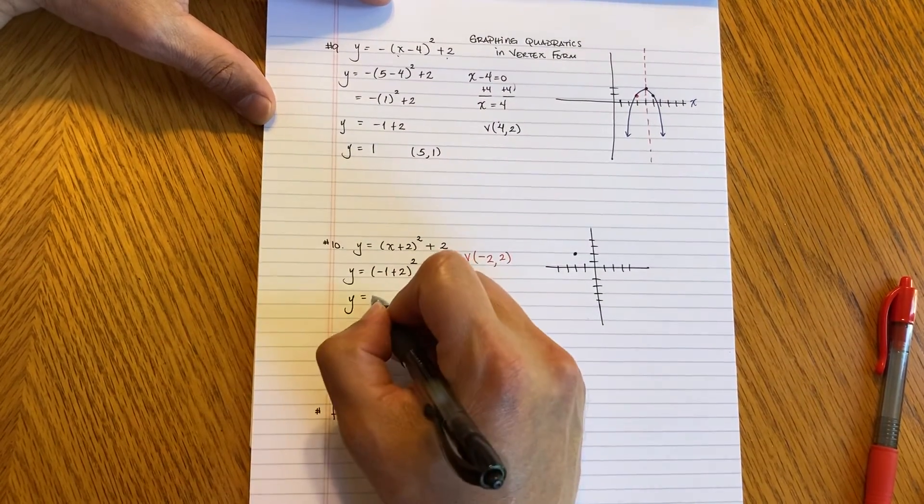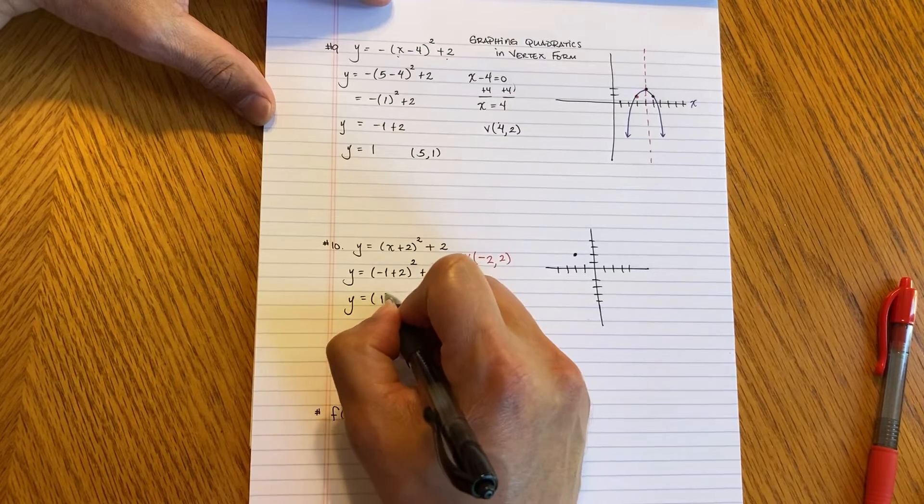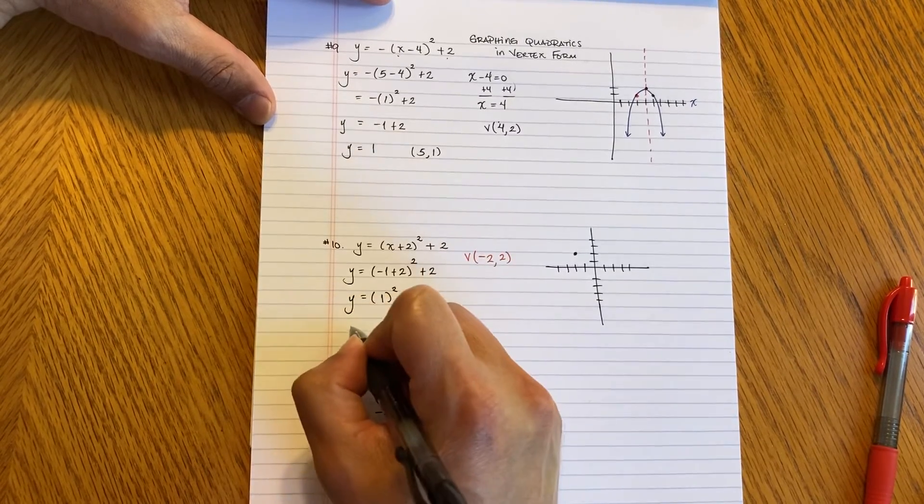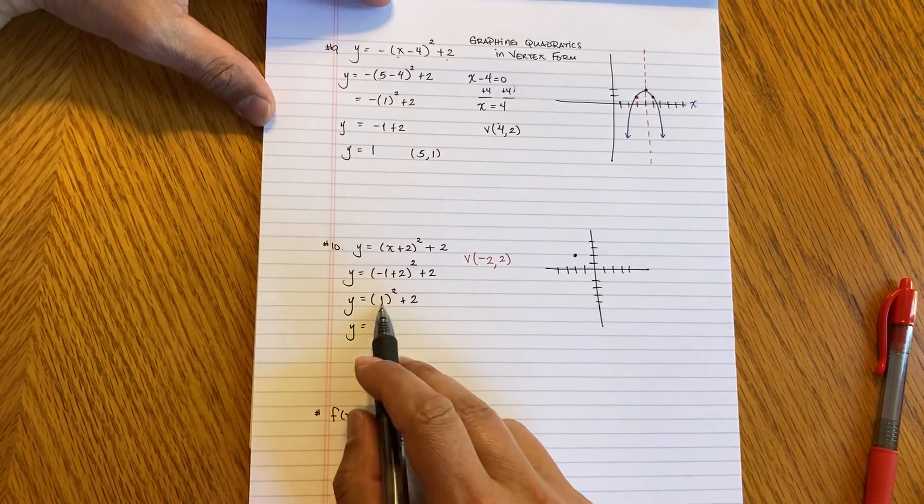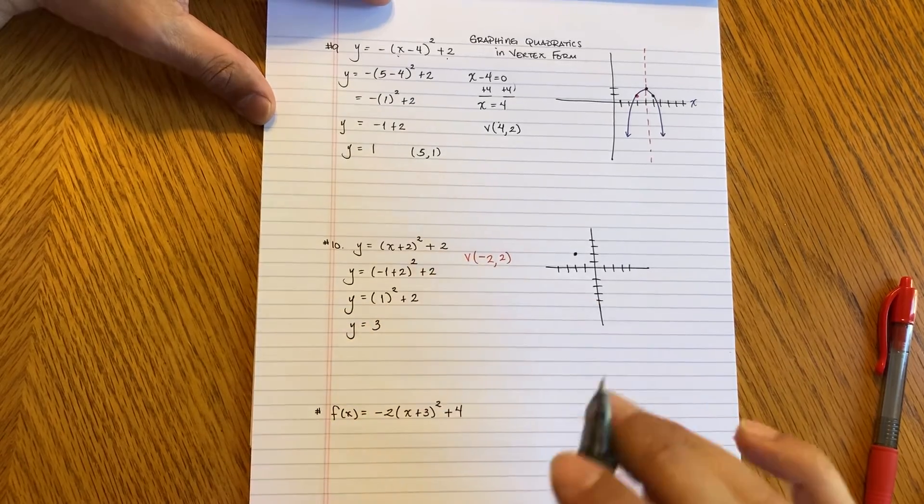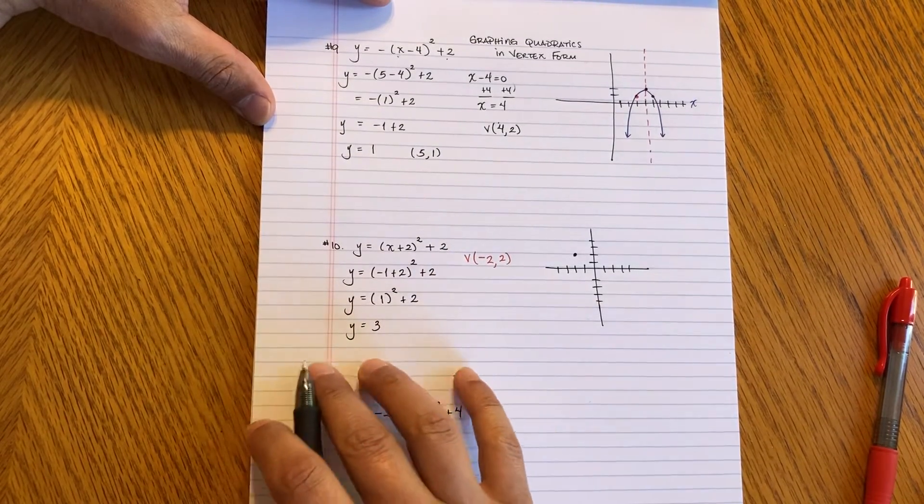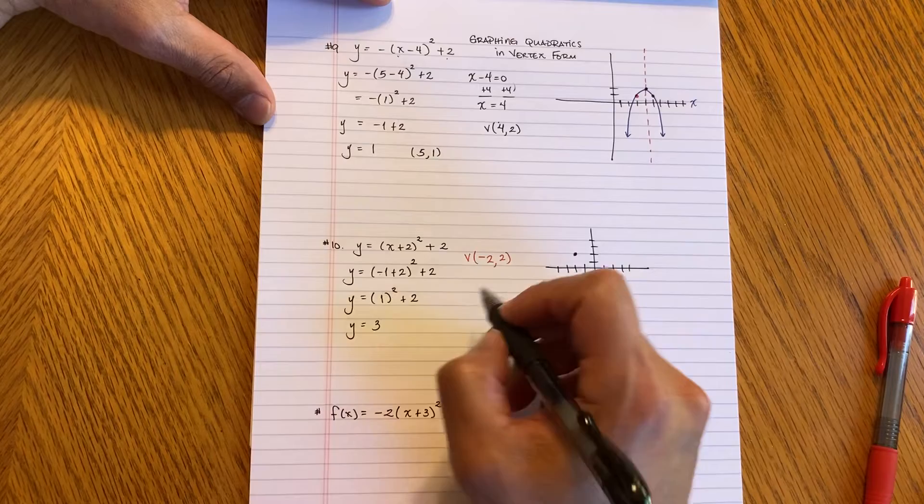So negative 1 plus 2 is 1. And be careful. 1 squared is 1. 1 plus 2 is 3. So in this parabola, in this function, we plugged in negative 1 for X.